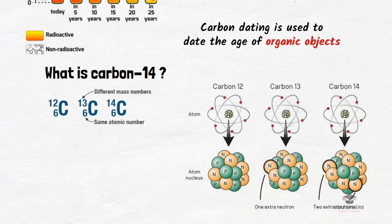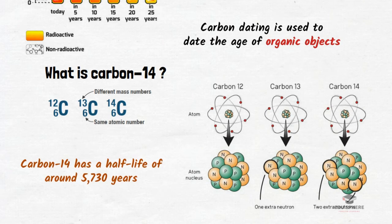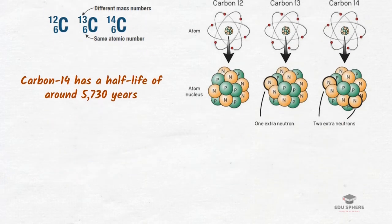Since carbon-14 is radioactive, it must have a half-life, right? So carbon-14 has a half-life of 5730 years. This means if there are 100 carbon-14 atoms on day 1, after 5730 years, there would be 50 carbon-14 atoms left.